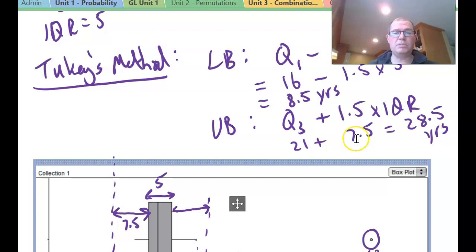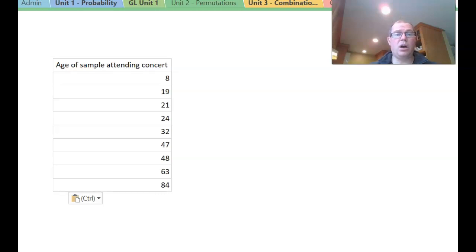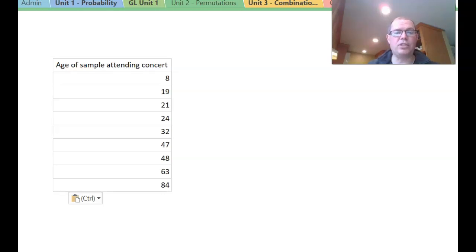That's how to do Tukey's method. Now it's your turn. Pause the video and find Q1, Q3, and the interquartile range, then use the formula to find the upper bound and lower bound for an outlier, and hence identify any outliers. You can look back at the example in the OneNote.